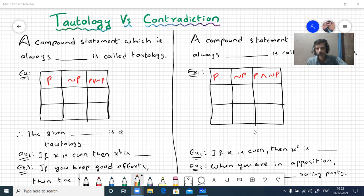Welcome to all. Today we'll discuss tautology and contradiction. A compound statement which is always true is called tautology. A compound statement which is always false is called contradiction. Let us write the truth table.